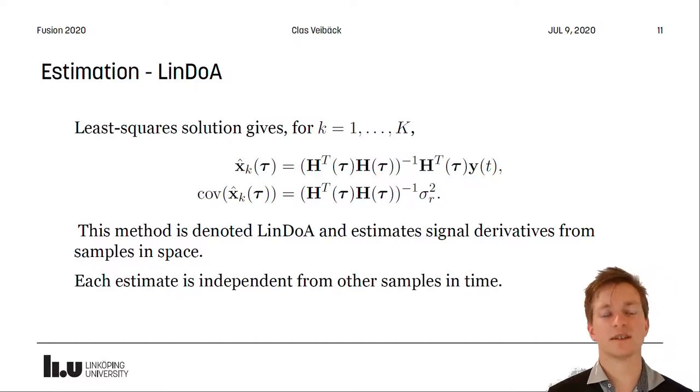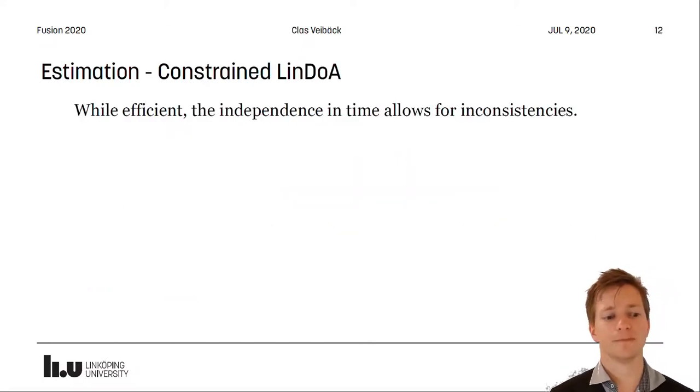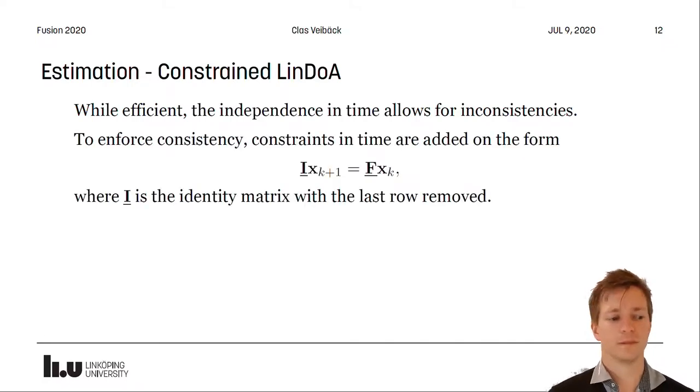This method is denoted the linearized direction of arrival and it estimates the signal derivatives from samples in space. This also means that each estimate is independent in time and this is very efficient. This method, however, the independence in time also allows for inconsistencies.